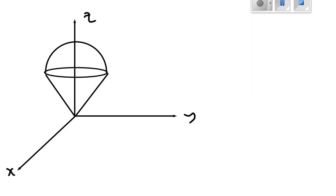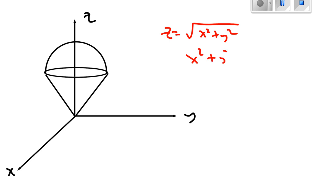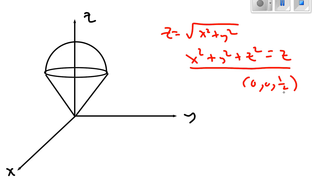This is video number two. It's the ice cream cone again, formed by these two equations: z equals the square root of x squared plus y squared, and x squared plus y squared plus z squared equals z. If you look at video number one in cylindrical coordinates, we'll show why that's really the equation of a sphere, centered at (0, 0, 1/2) with a radius of 1/2.